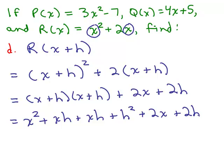And let's see, there's only two like terms, the xh. Remember, that's 1xh + 1xh. So the final answer is x² + 2xh + h² + 2x + 2h.